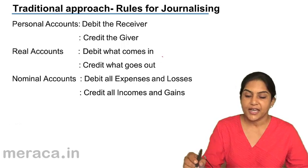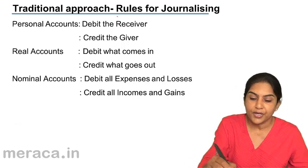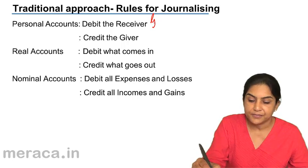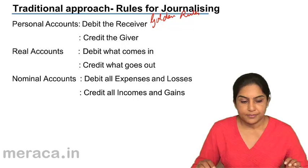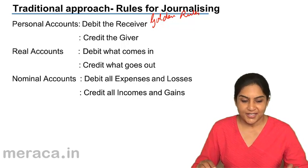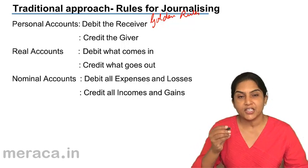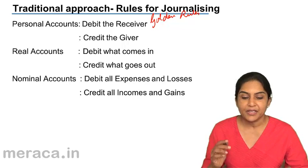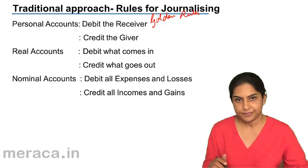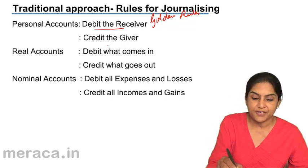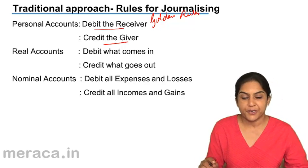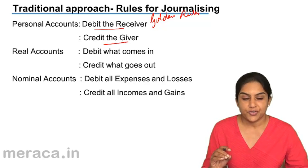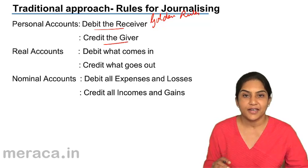The rules for journalizing — actually these are called the golden rules of journalizing. The golden rules say that in case of personal accounts, there is a person involved. Debit the receiver, credit the giver.